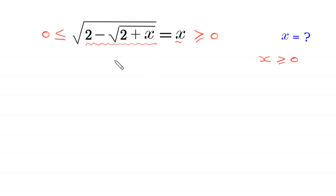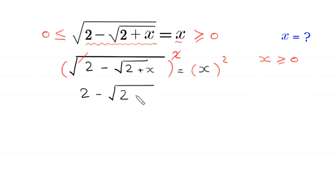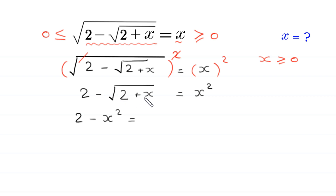Now, let's continue by squaring both sides of this equation. The left hand side is square root of 2 minus square root of 2 plus x, equal to x. We take the square of both sides, so the square cancels with the square root, and at the left hand side we are left with 2 minus square root of 2 plus x is equal to x squared. Now, we move x squared to the left side and the negative square root of 2 plus x to the right side. This equation becomes 2 minus x squared is equal to positive square root of 2 plus x.